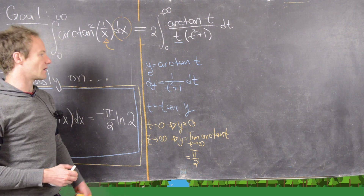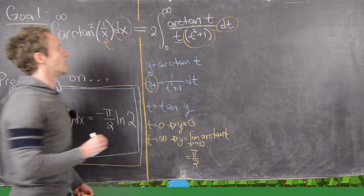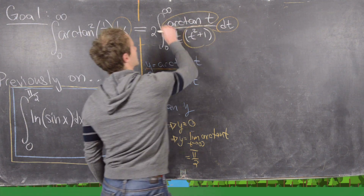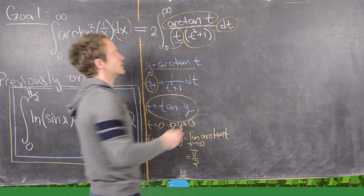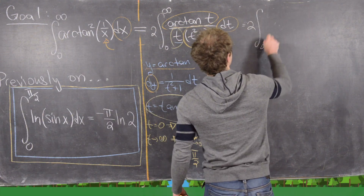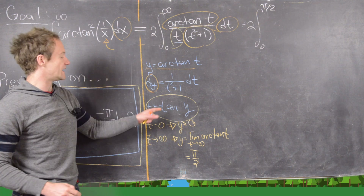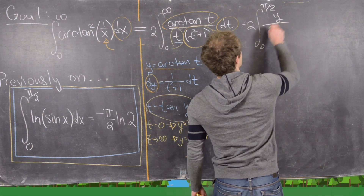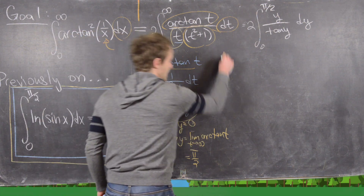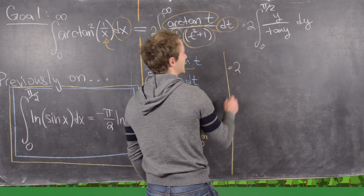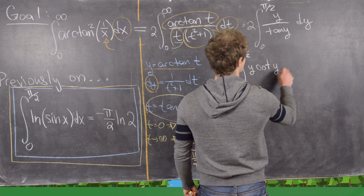Substituting in: dy gobbles up dt/(t² + 1), y replaces arctan(t), and tan(y) replaces t in the denominator. This gives us twice the integral from 0 to π/2 of y over tan(y) dy, which we rewrite as 2 times the integral from 0 to π/2 of y times cotangent(y) dy.